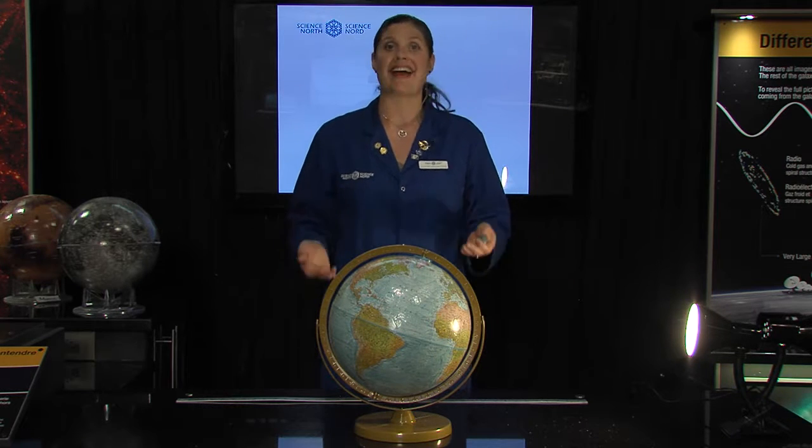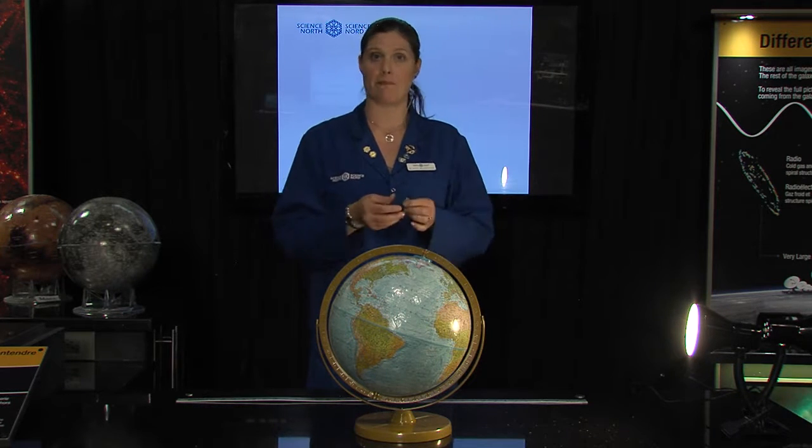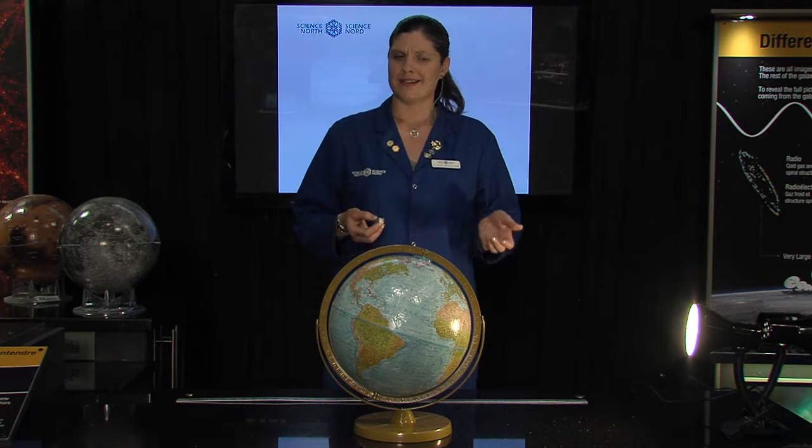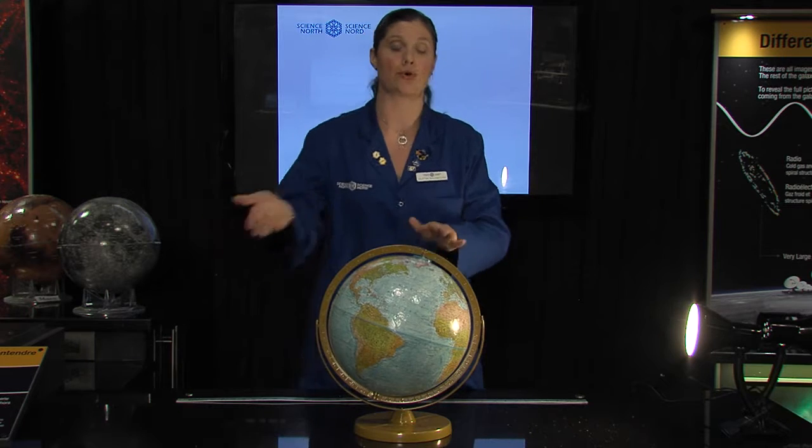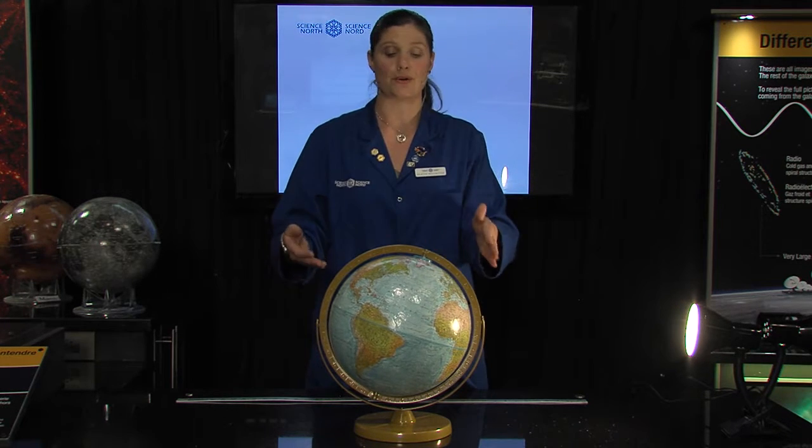The Moon takes 29.5 days to orbit the Earth, which is about a month. And in fact, months are based on the Moon cycle. So how come our calendar months aren't in sync with the phases of the Moon? Well, that's because it takes 11 days longer for the Earth to orbit around the Sun than it takes for the Moon to orbit around the Earth 12 times. So in order for our 12 calendar months to synchronize with the seasons, we've added extra days to the Moon cycles.